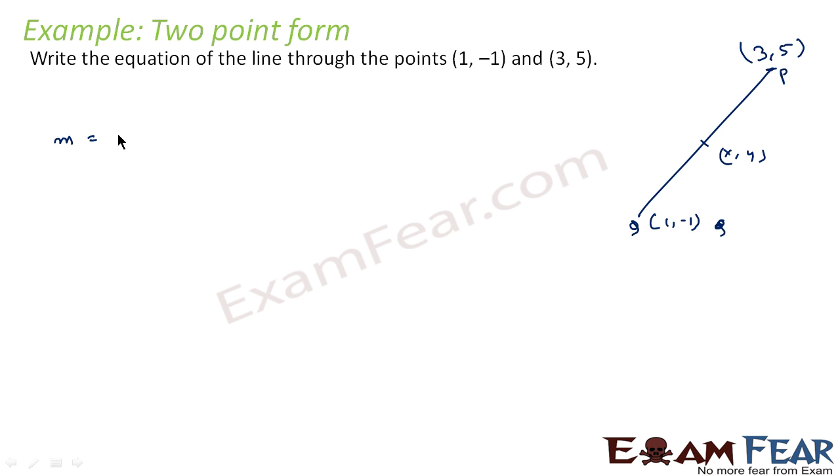Now we can directly use the formula or we can use this way. We'll find the slope of the line first. M is y2 minus y1 divided by x2 minus x1. This comes out to be 5 minus (-1) divided by 3 minus 1, that is 6 divided by 2, which equals 3. This is the slope of the line. Now we can use this formula: y minus y1 equals m times x minus x1.